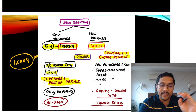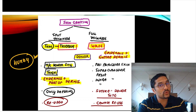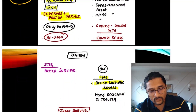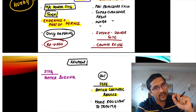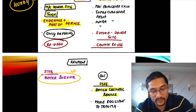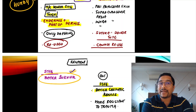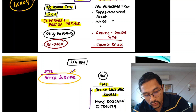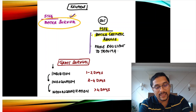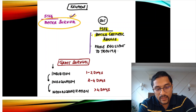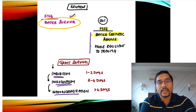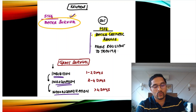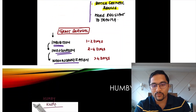Full thickness skin graft has epidermis and entire dermis — you must suture up the donor area and cannot reuse it. Split thickness skin grafts are thinner and have better survival, whereas full thickness skin grafts have better cosmetic results, better color matching, and are more resistant to trauma. The graft survives via three methods: imbibition (1–2 days), inosculation (2–4 days), and neovascularization (beyond 4 days).